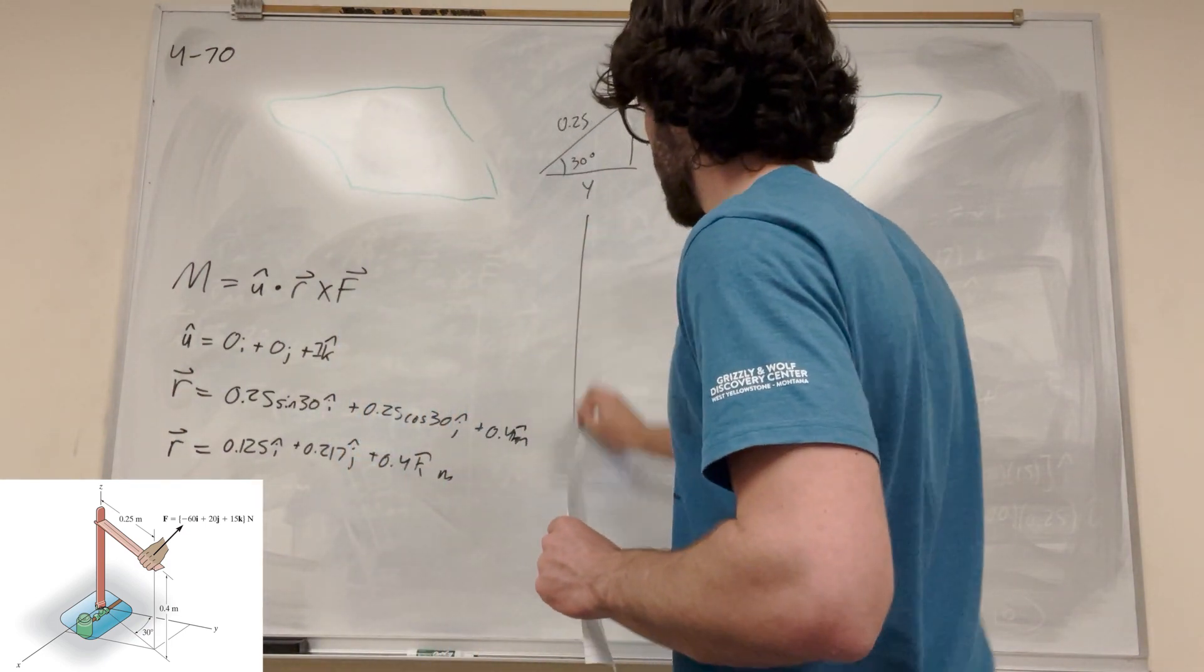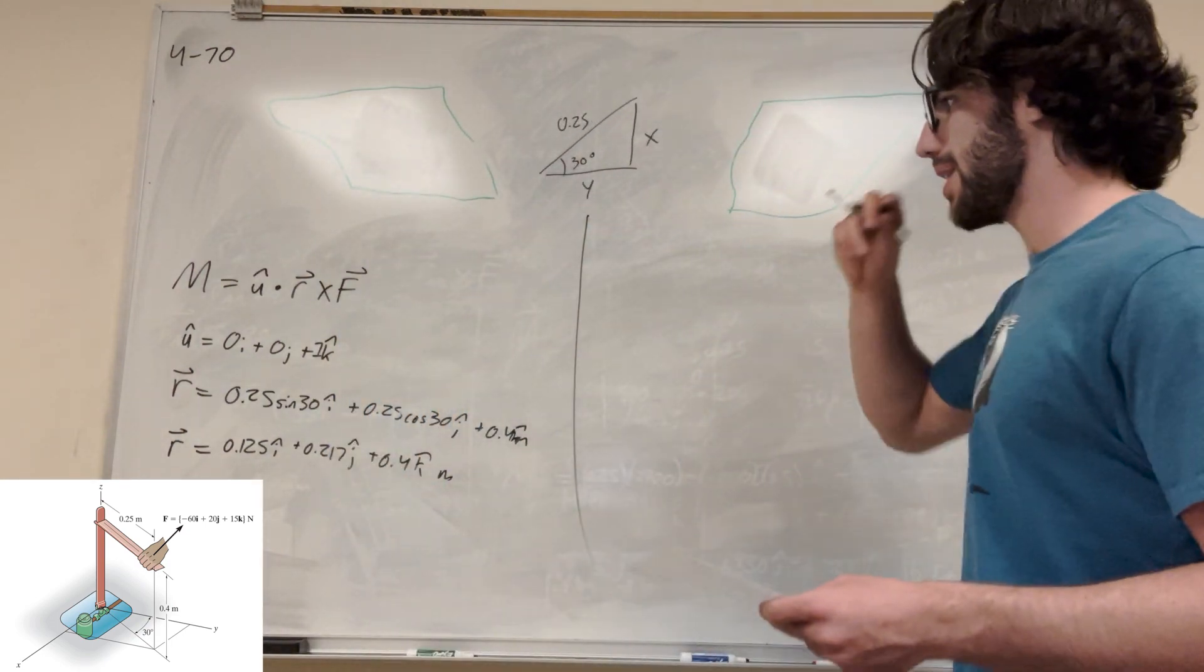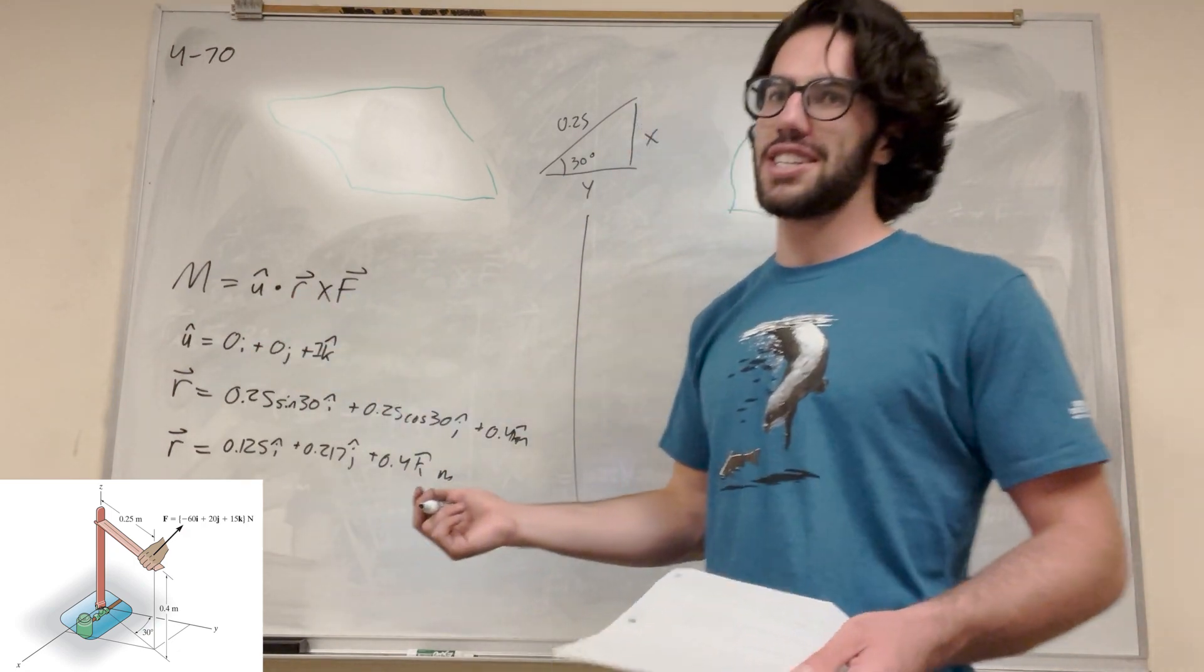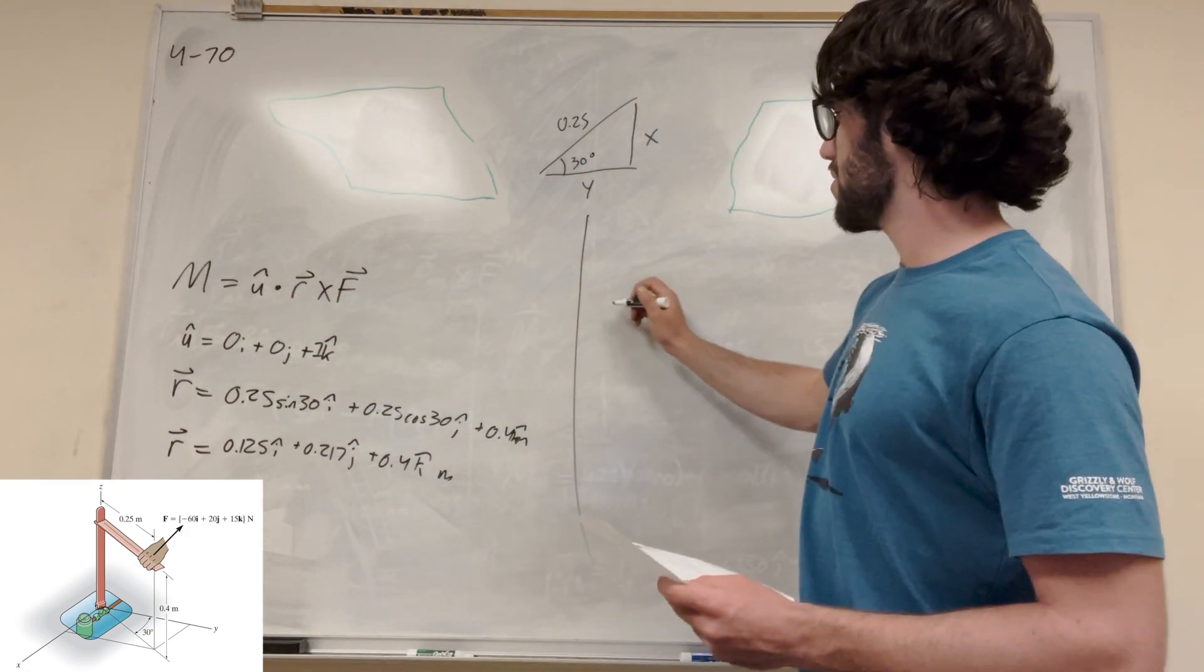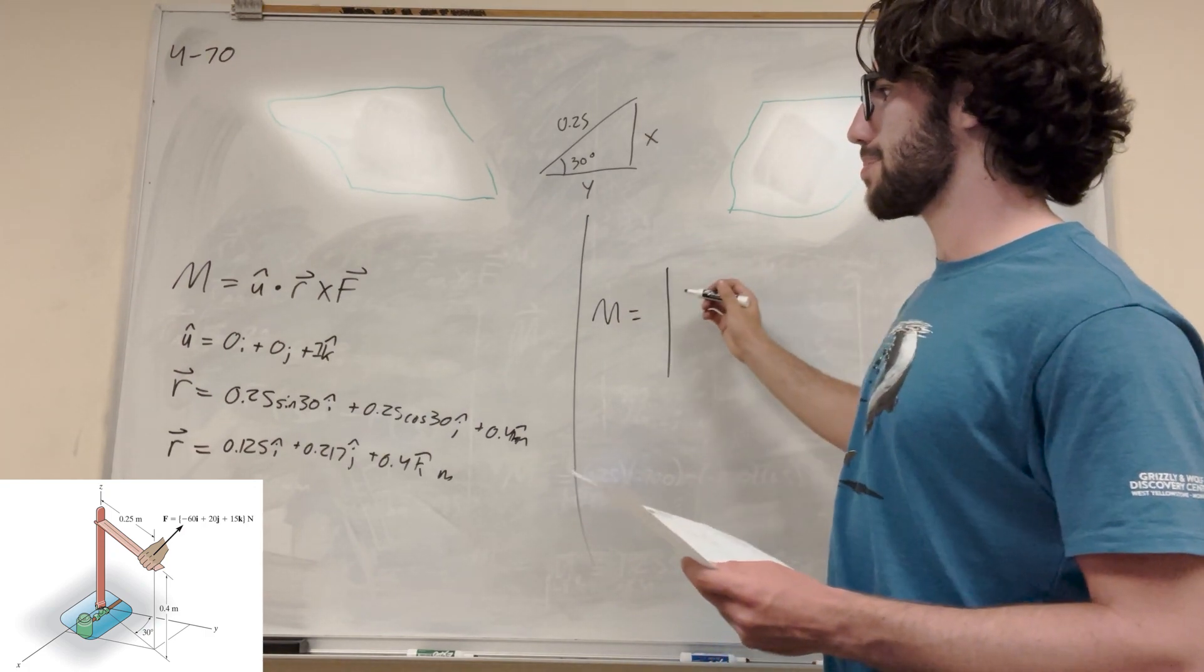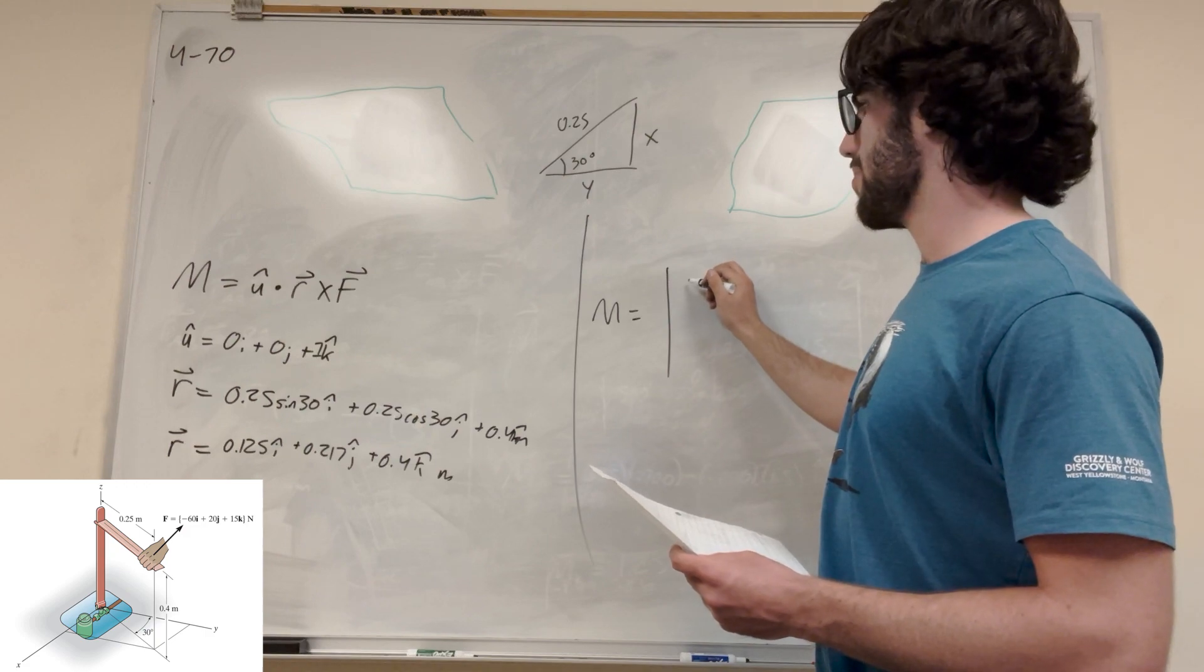So now we just have to do the determinant, right? So if we want to do the determinant, we can do it like this and then dot it with it. But there's actually a pretty easy way to do it. What you do is you set up your determinant. But instead of putting i, j, k across the top, you just put your position vector, or I mean your unit vector.